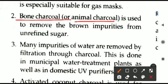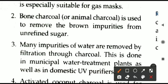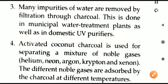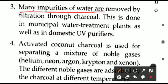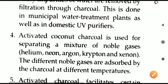Next is bone charcoal, made from animal bones. It is used to remove brown impurities from unrefined sugar during the sugar refining process. The bone charcoal does the adsorption and separates out the impurities. Additionally, many impurities in water are removed by filtration through charcoal. This charcoal layer is present in RO/UV water purifiers. Municipal water treatment plants may also pass water through charcoal to remove impurities.